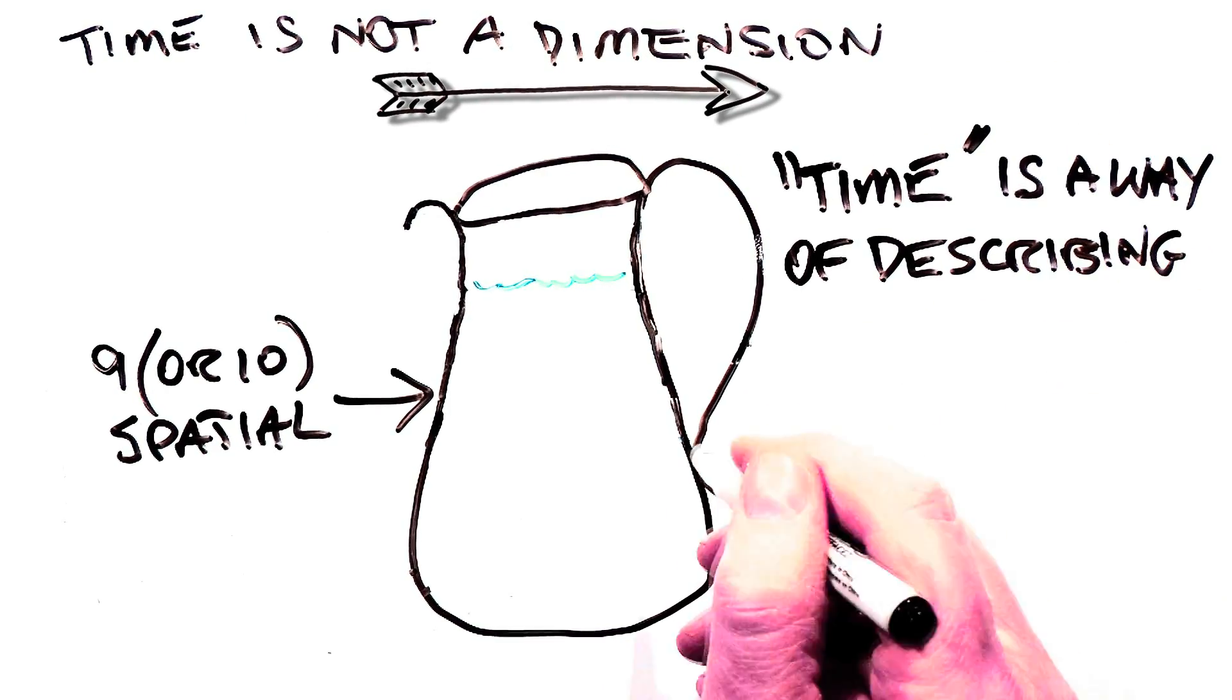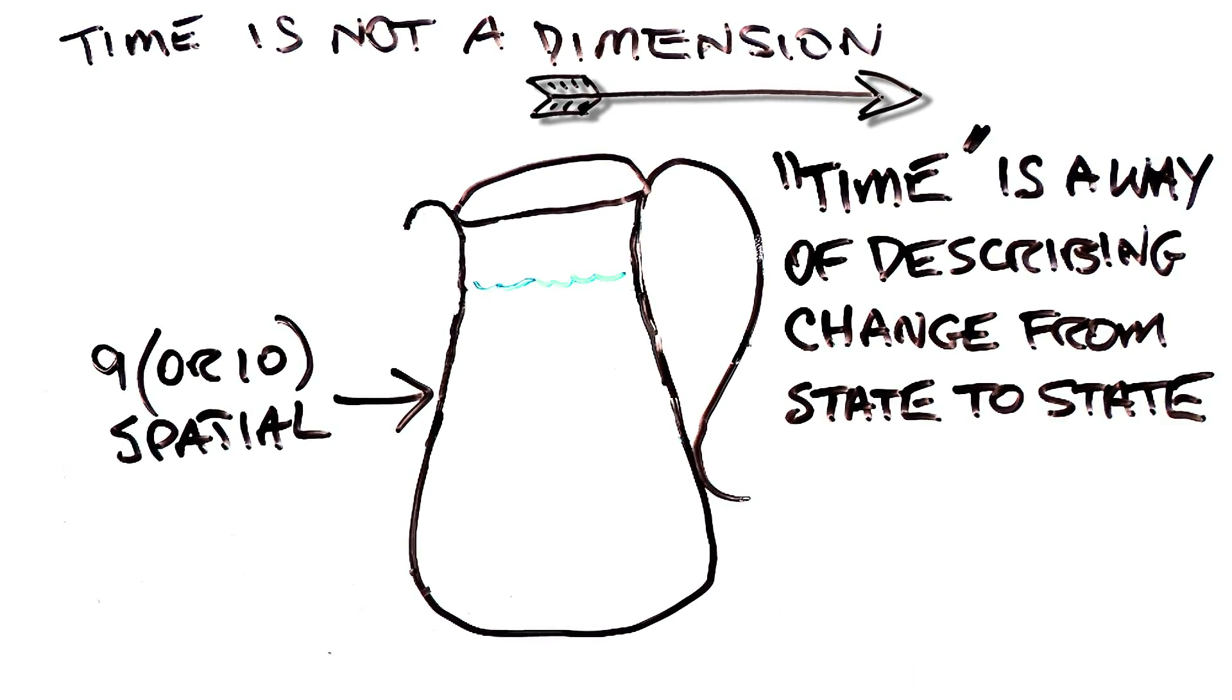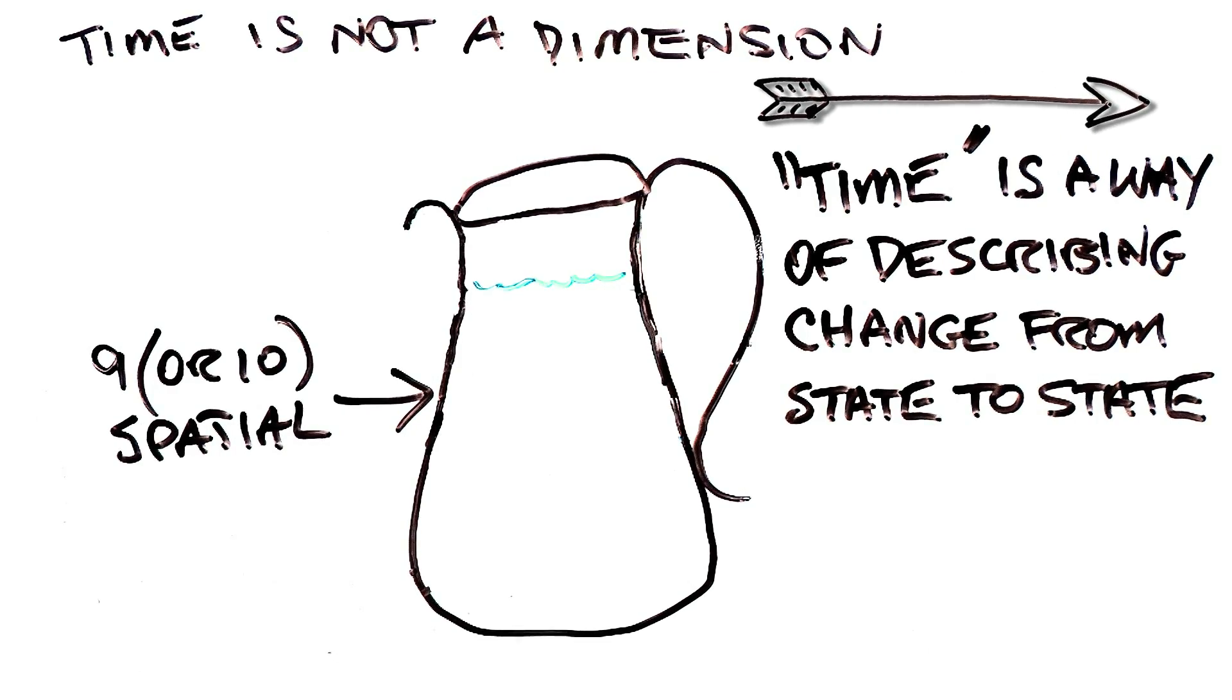We experience the fourth dimension as having only one direction, the direction which moves us away from the lowest entropy beginning of our universe towards the highest entropy ending of our universe. But that doesn't mean the opposite direction isn't just as valid.